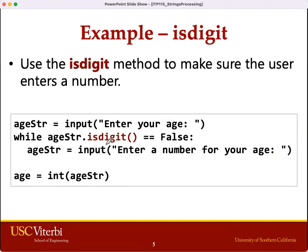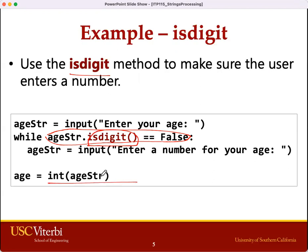Now let's go back to the example with our age variable. We want to check if the input contains digits only. When this entire condition is true, meaning that there are some non-digit characters, we're going to keep asking the user to retype their age. When this entire condition is false, meaning that each character is a digit, meaning the string contains only digits, we can exit the while loop and safely convert the string to a real number with the int function.